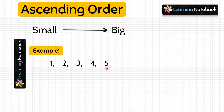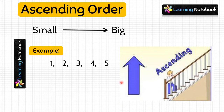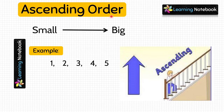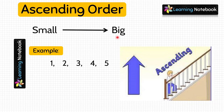Now look at this picture. When we move from downstairs to upstairs, it is called ascending. You can easily remember ascending order from this picture. Ascending order means arranging numbers from small to big, and do remember that in ascending order, the numbers keep on increasing.